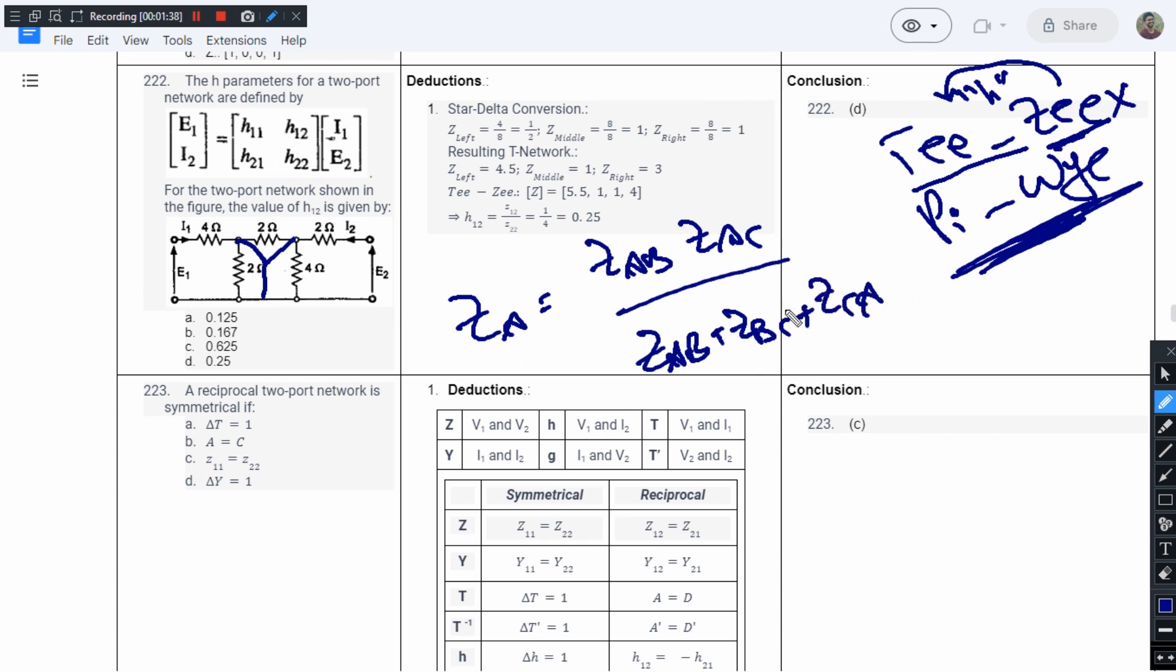Here, ZAB plus ZBC plus ZCA is 2 plus 2 plus 4, which equals 8. This point, this above term is going to be the product of these two. So this is 2 times 4 divided by 8, which equals 1/2.